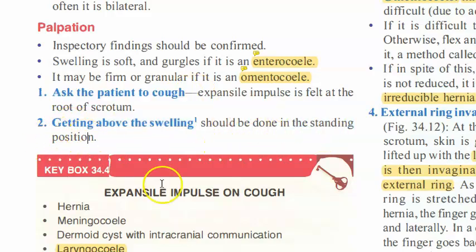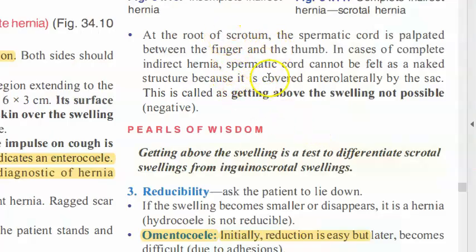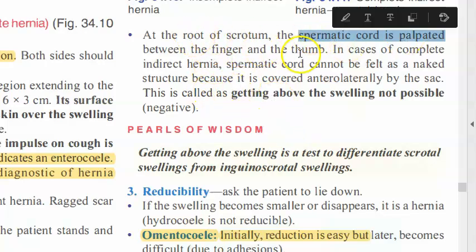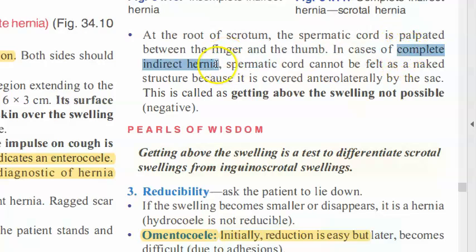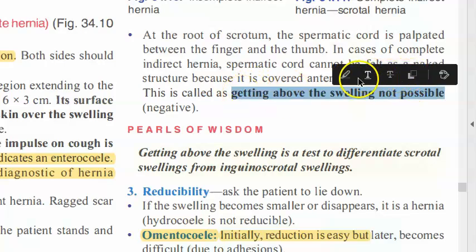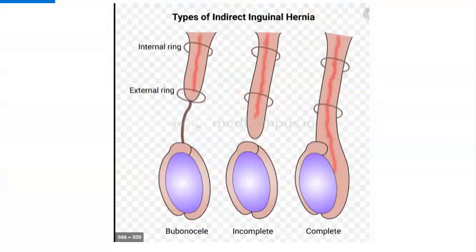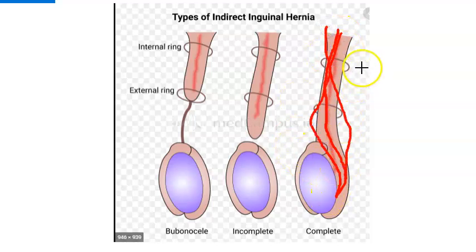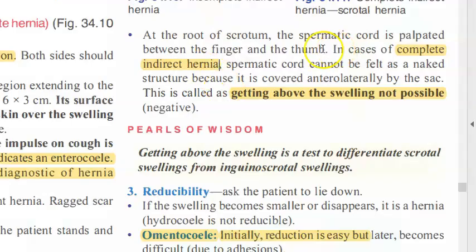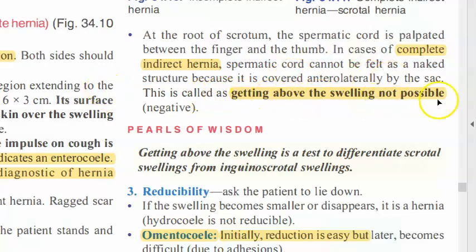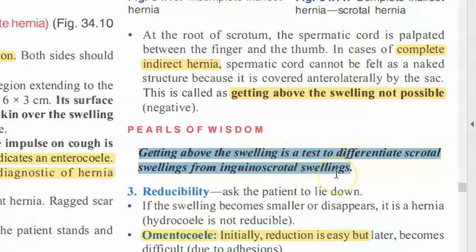In the standing position, try to get above the swelling. At the root of the scrotum the spermatic cord is palpated. In case of complete indirect hernia, the spermatic cord cannot be felt — getting above the swelling is not possible. In complete indirect hernia, the spermatic cord cannot be felt as a naked structure because it is covered anterolaterally by the sac. This is called 'getting above the swelling — negative.'